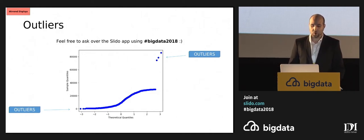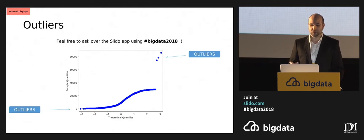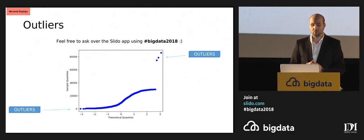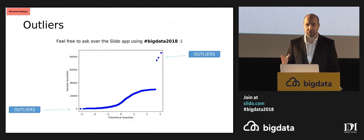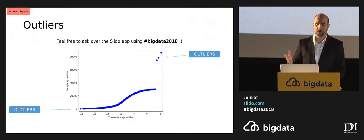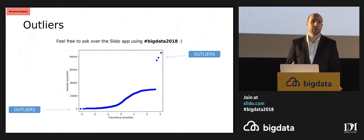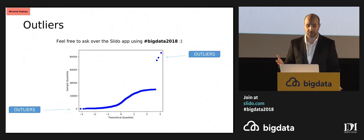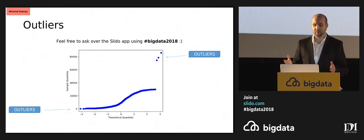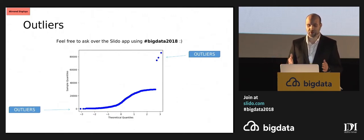Outliers can be a bit of an issue because they skew our data. Essentially, when we are trying to forecast, or we are trying to use regression analysis, machine learning, or what have you, to try and come up with valuable insights, outliers are usually a significant impediment.